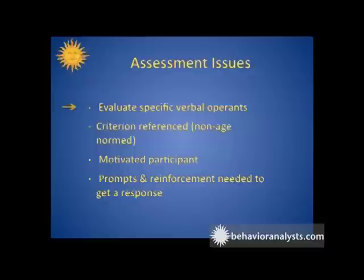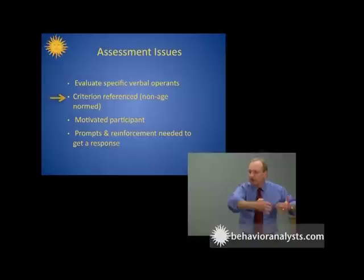When it comes to assessment, there are several critical issues. We want to look at the specific verbal operants: can they ask for things, name things, repeat back words or phrases, and talk about things in their absence? We need to know skill levels because all children come with different levels in each area. We also want a criterion-referenced assessment — not just a standardized one telling us they're at the 12-month level — because we need to know specifically what skills they have and don't have. Age norms don't really help me; I need to know what skills they have.